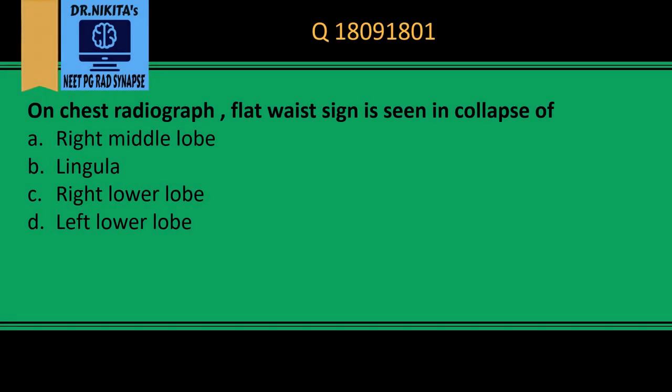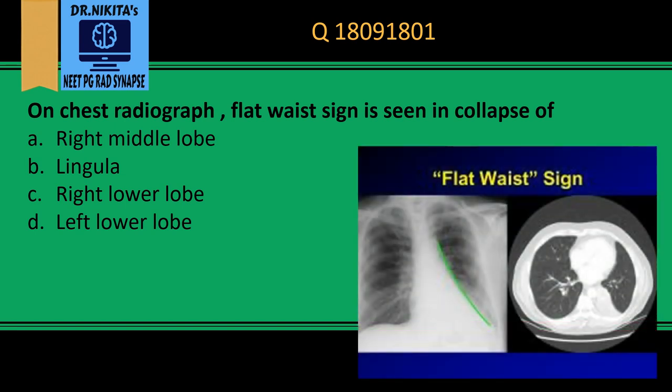On chest radiograph, the flat waist sign is seen in collapse of the left lower lobe. The flat waist sign refers to the loss of the normal contour of the aortic arch and the pulmonary artery.